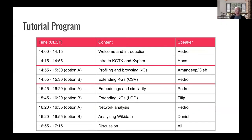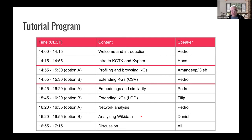How is the tutorial organized? We're going to show an intro to KGTK and Kypher. Then, given that we have only a small number of people, Hans will do a poll to decide which part we do. It'll be either profiling or extending KGs with CSV files, then we'll take a break. Then we have the option between doing linked open data, showing how KGTK can work with linked open data, or doing embeddings, or network analysis, or the work we did to analyze the full Wikidata dump and the history of all Wikidata dumps since the inception of the project.